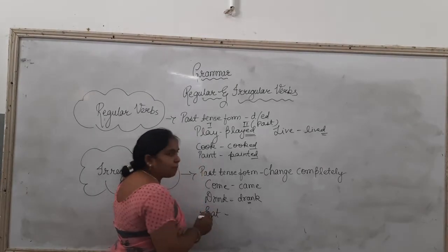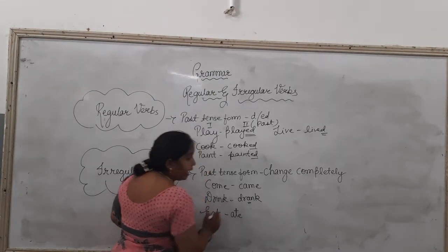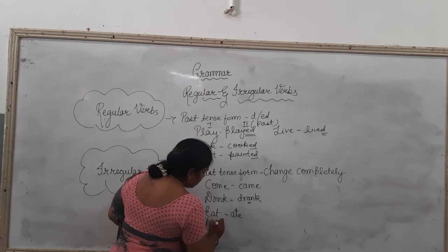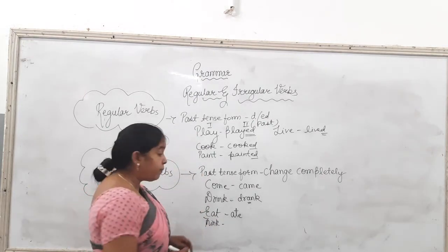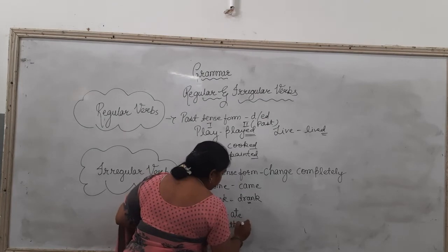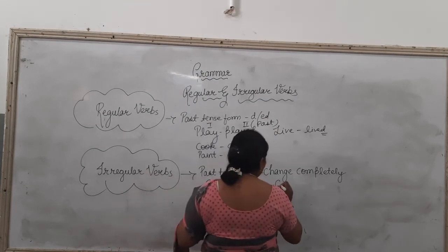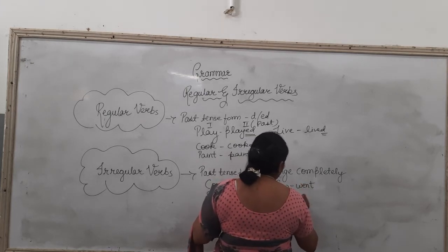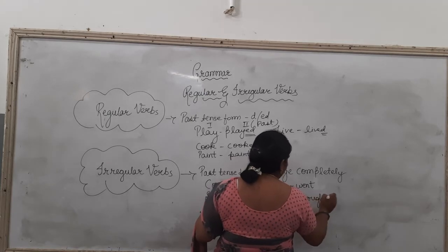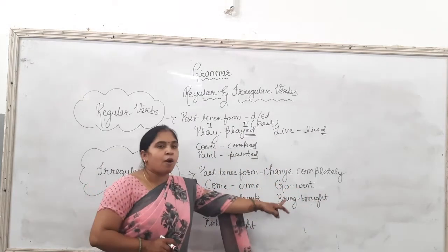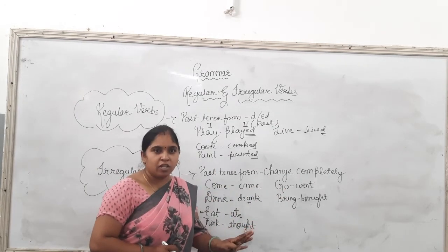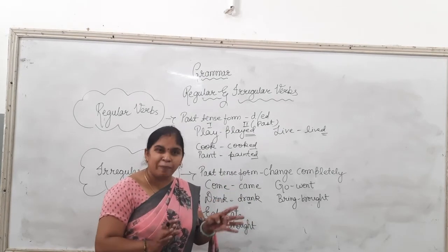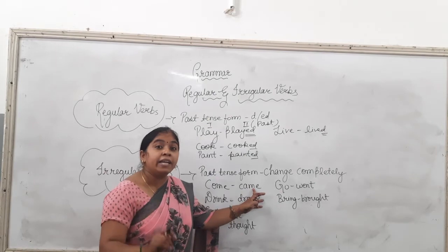More examples of irregular verbs: eat — the present form is eat, and the past form is ate. Think — the present form is think, and the past form is thought. Go becomes went. Bring becomes brought. If you look at the past forms of these verbs, the verbs are completely changed.